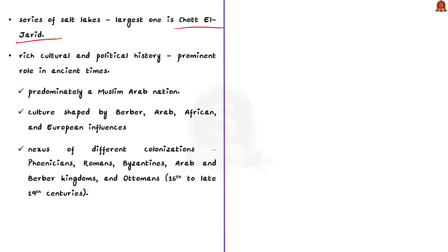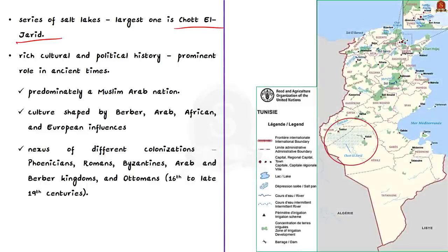To summarize Tunisia's geography: it borders the Mediterranean Sea, Algeria, and Libya. The Atlas Mountains pass through the north, approximately 40% of the country is occupied by the Sahara Desert, and the country is also famous for its salt lakes.